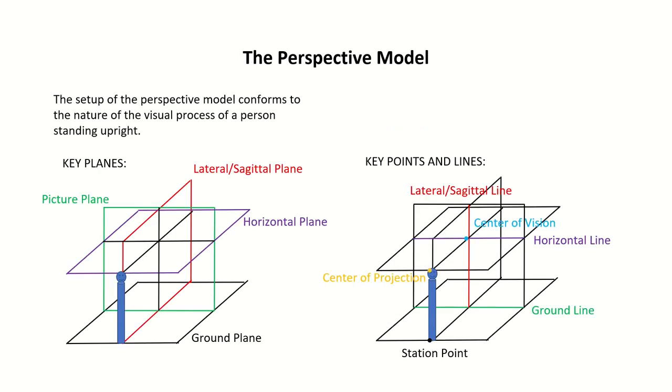A more detailed version of central projection is called the perspective model. In addition to the ground plane and picture plane, the perspective model includes the lateral plane, which is orthogonal to the picture plane, and the horizontal plane, which is parallel to the ground plane.